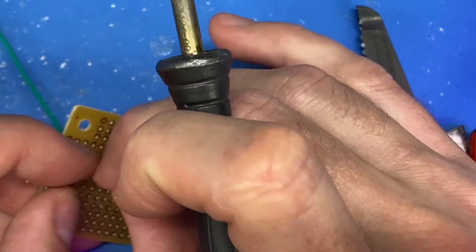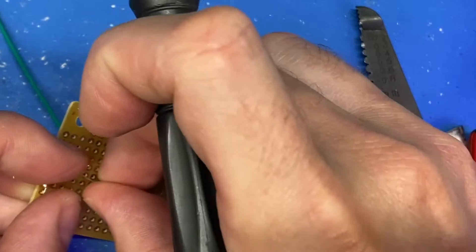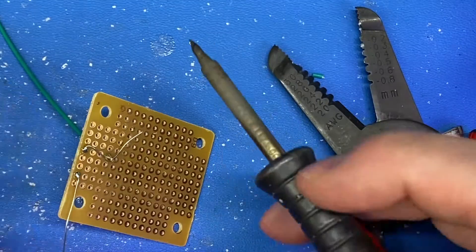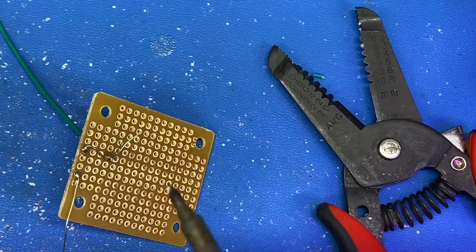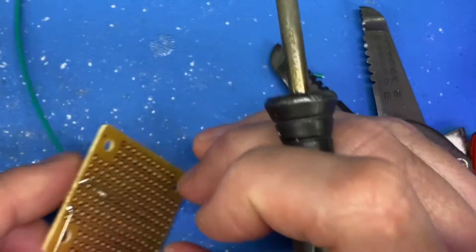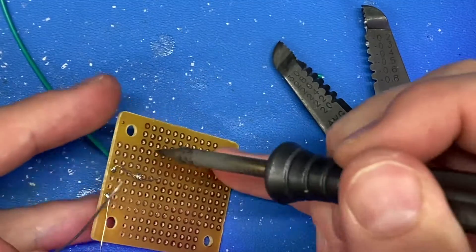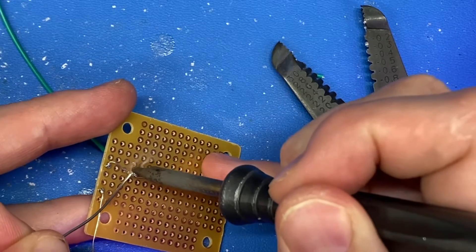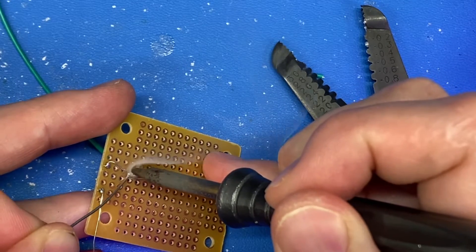But then you can do things like actually use this extra wire from the resistor to connect it together. And you can even do a wrap around to really make sure you have lots of wire area to cover. And then you can solder it together.